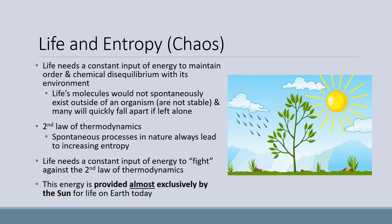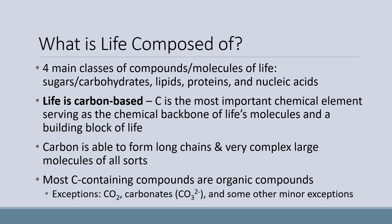Life also needs a constant input of energy to maintain order and chemical disequilibrium with its environment. Life's molecules would not spontaneously exist outside of an organism — they're not stable, and many will quickly fall apart if left alone. The second law of thermodynamics says that spontaneous processes in nature always lead to increased entropy. Because of that, life needs a constant input of energy to fight against the second law of thermodynamics. This energy is provided almost exclusively by the sun for life on Earth today, but there are entire ecosystems based around chemical energy.